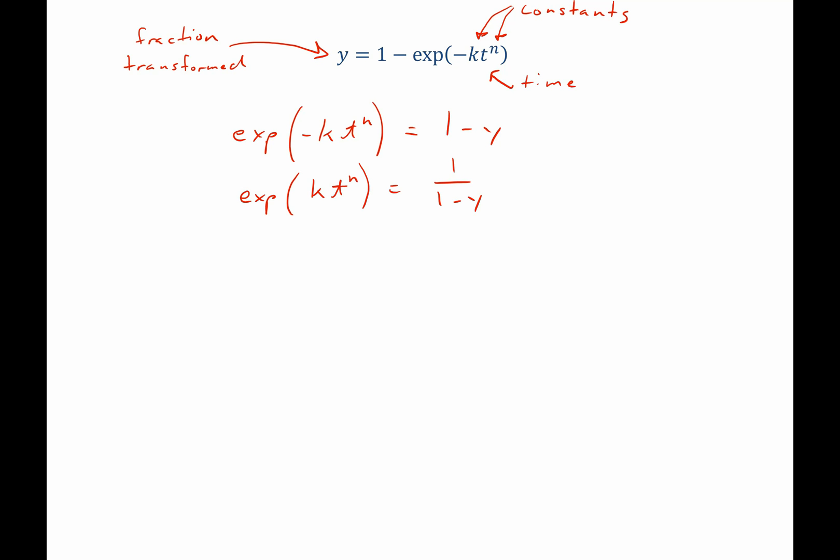Recall that getting rid of that negative is just a property of exponents. Now we can take natural log of both sides and we're left with kt to the n on the left hand side equals natural log of 1 over 1 minus y on the right hand side.